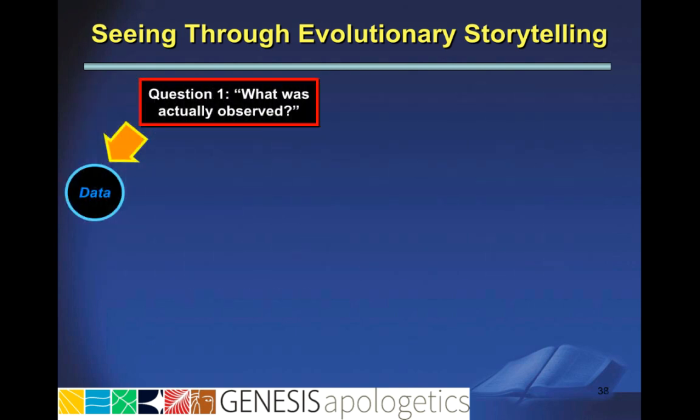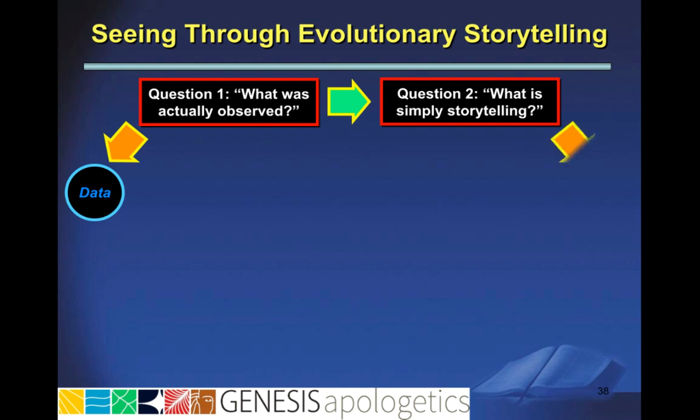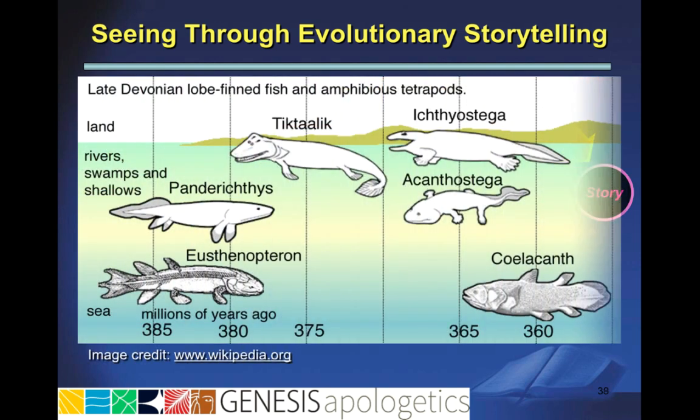The next question we want to ask is: what is simply storytelling? This enables you to determine what the story being told about the evidence is, and to distinguish it from the actual data. In this case, the story being told about these fossils is that they represent a transition from lobe-finned fish — fish with bony fins — to tetrapods, organisms with four feet.